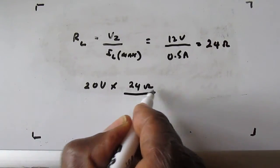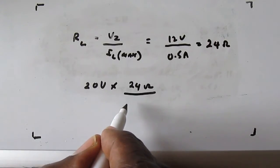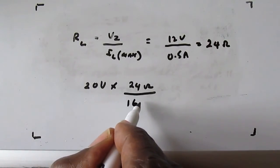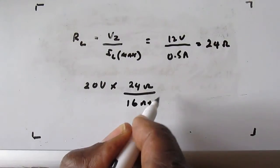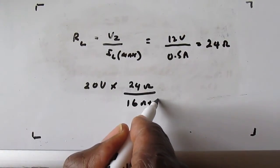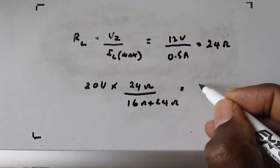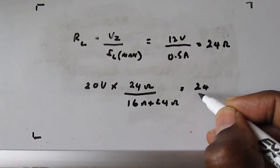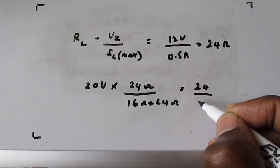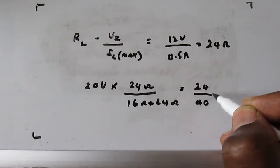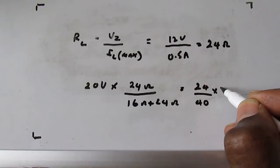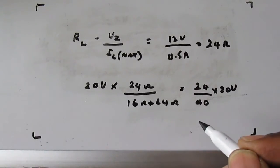divided by the series resistor, which is 16 ohms, plus the load resistor, 24 ohms. That equals 24 ohms divided by 40,